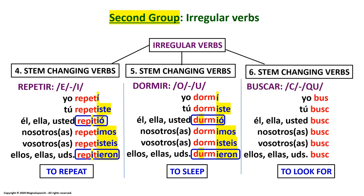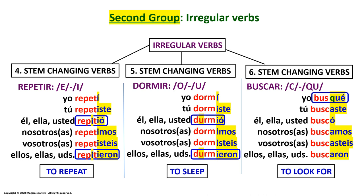Group number six: spelling changing verbs. Here we are going to change the letter C into QU. The example we have is BUSCAR, meaning 'to look for.' In past tense: Yo busqué. Tú buscaste. Él, ella, usted buscó. Nosotros, nosotras buscamos. Vosotros, vosotras buscasteis. Ellos, ellas, ustedes buscaron. Pay attention only to the first person singular: yo busqué. This is the only irregular conjugation of the verb — the rest of the personal pronouns are conjugated in a regular way.